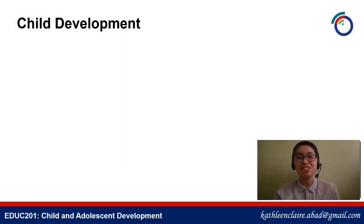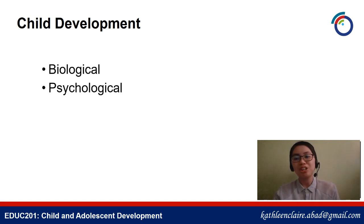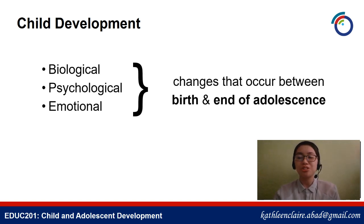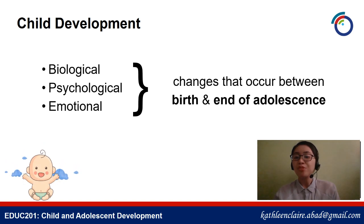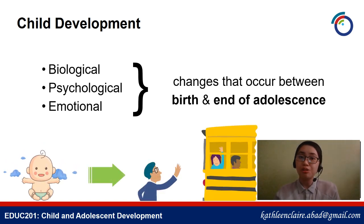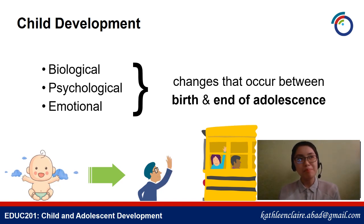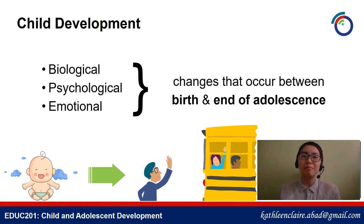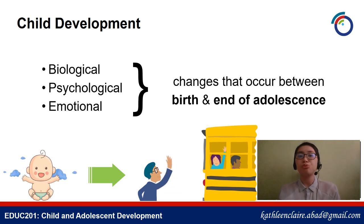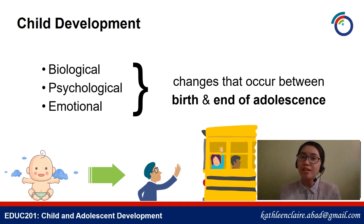First, what is child development? These are the biological, psychological, and emotional changes that occur between birth and the end of adolescence. This happens as the individual progresses from a state of dependency to increasing autonomy. Before, when we were babies, we were always dependent on our parents because we didn't know things yet. But as we grow older and mature, we learn to do things on our own and slowly become independent.